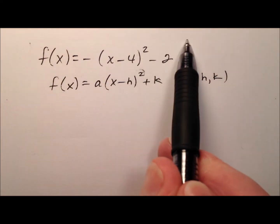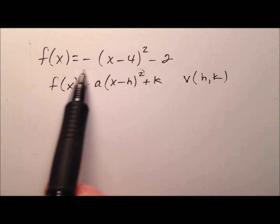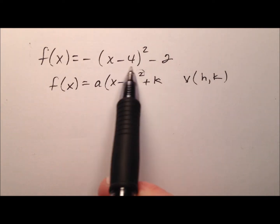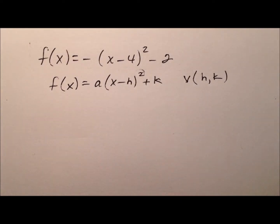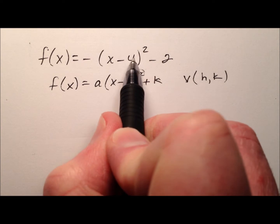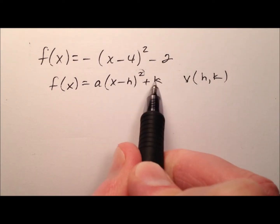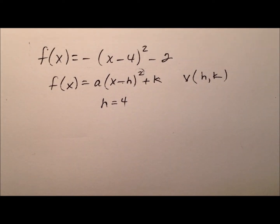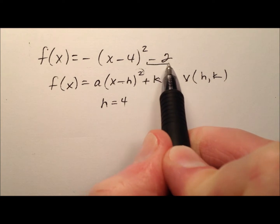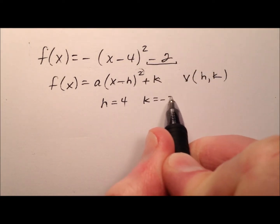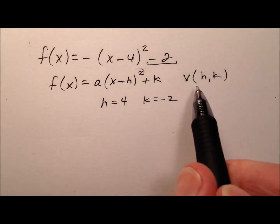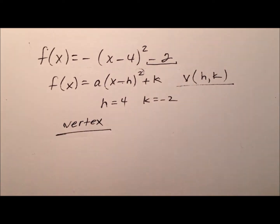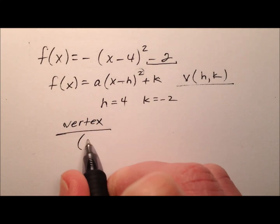In this example, we're going to look very specifically at this function f of x equals negative, and this quantity x minus 4 will be squared minus 2. So it looks like we have x minus 4, and our general formula here is x minus h, so it looks like the h value is going to be 4. And for the plus k part, k is going to be negative 2. So our vertex will be given by the ordered pair h, k — in our case, 4, negative 2.